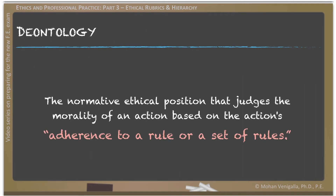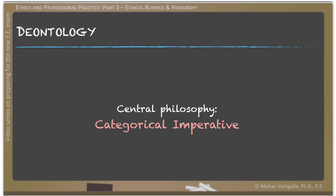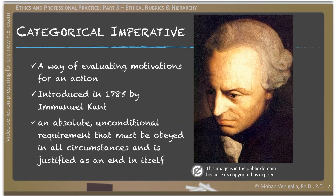First up, deontology. This ethical position prescribes adherence to a rule or a set of rules. The simplest way to characterize deontology is: just do your duty. The central philosophy behind deontology is called categorical imperative. Categorical means without exception; imperative means duty to perform it. Categorical imperative was first proposed in 1785 by Immanuel Kant. It is an absolute, unconditional requirement that must be obeyed in all circumstances and is justified as an end in itself.